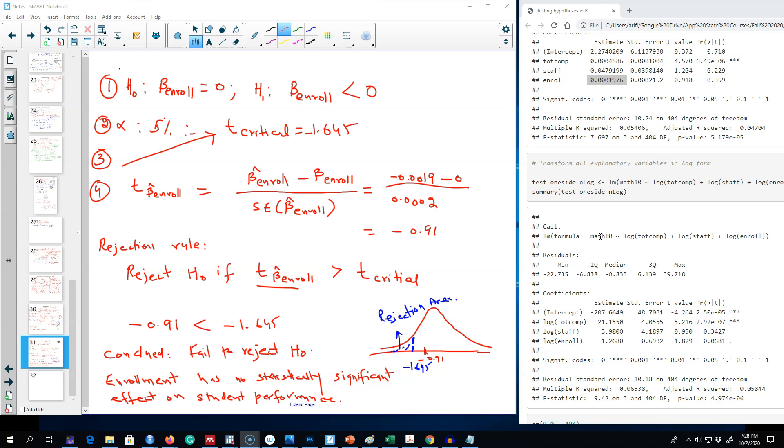In this video, I'm going to show you that if we change the functional form of our model, it can have some impact on the conclusions that we arrive at. For this, I'm going to transform all of my variables on the right-hand side into log form. Now this model is level-log.